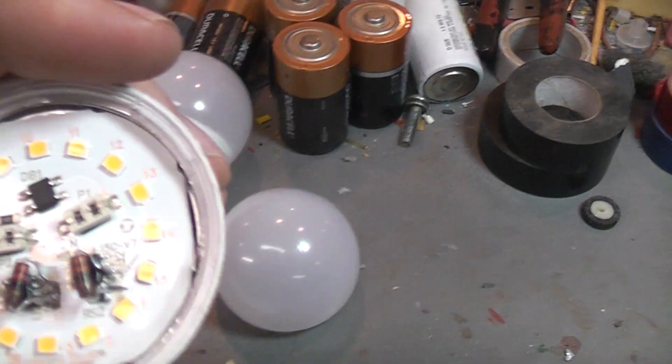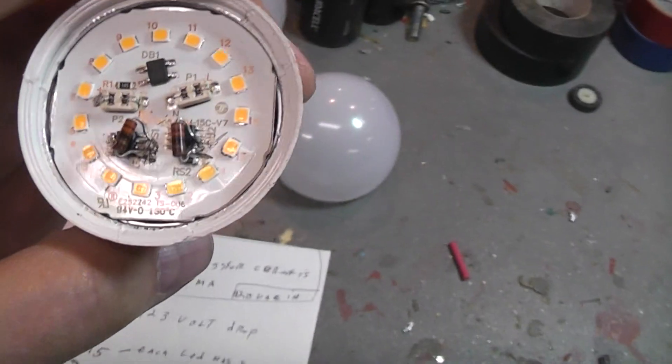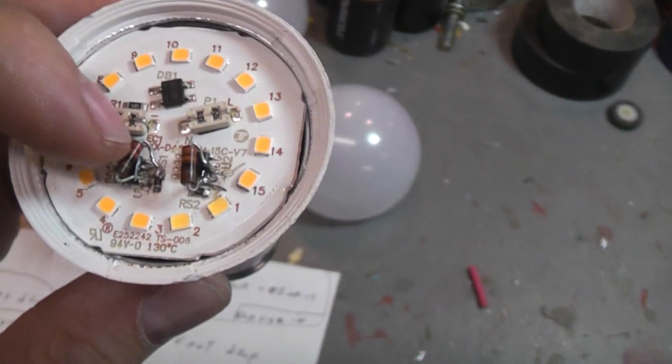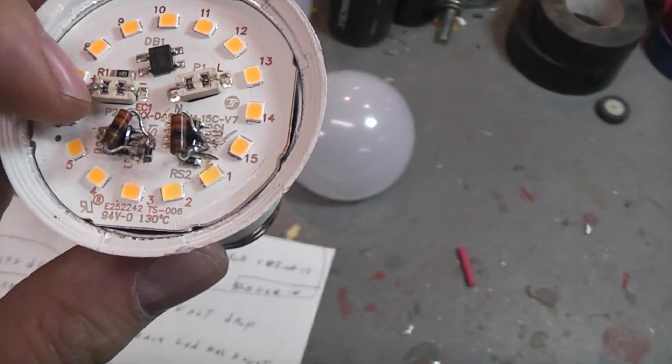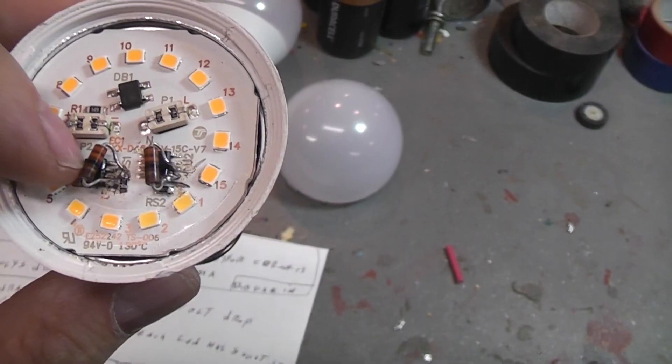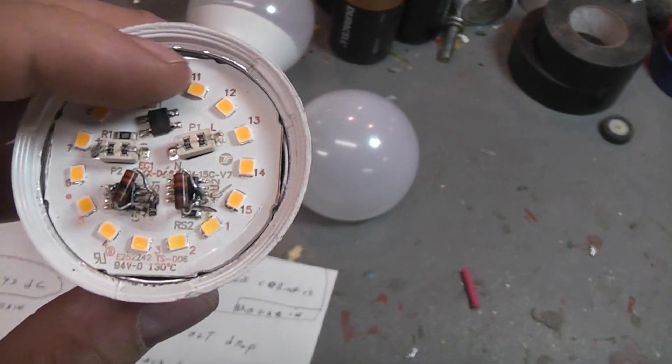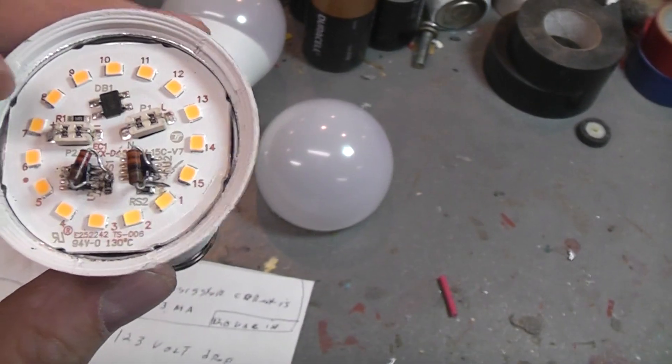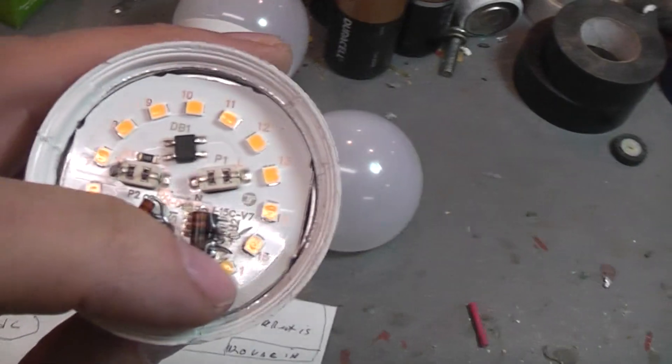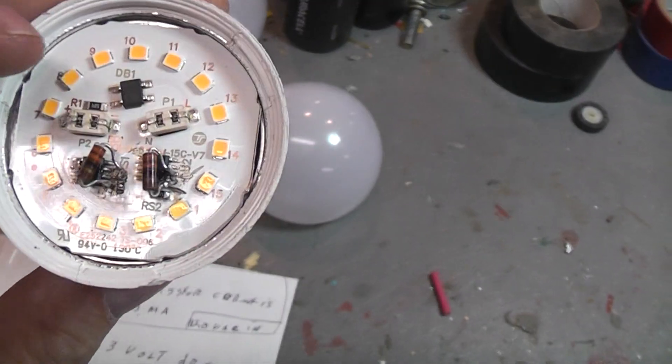Basically what they've changed in the last two years is now there are two current limiting chips instead of just one. And they're running them in parallel though. So it wasn't like half of the LEDs were on one and half the LEDs were on the other. They are running the 15 LEDs. One starts here and number 15 is right there.